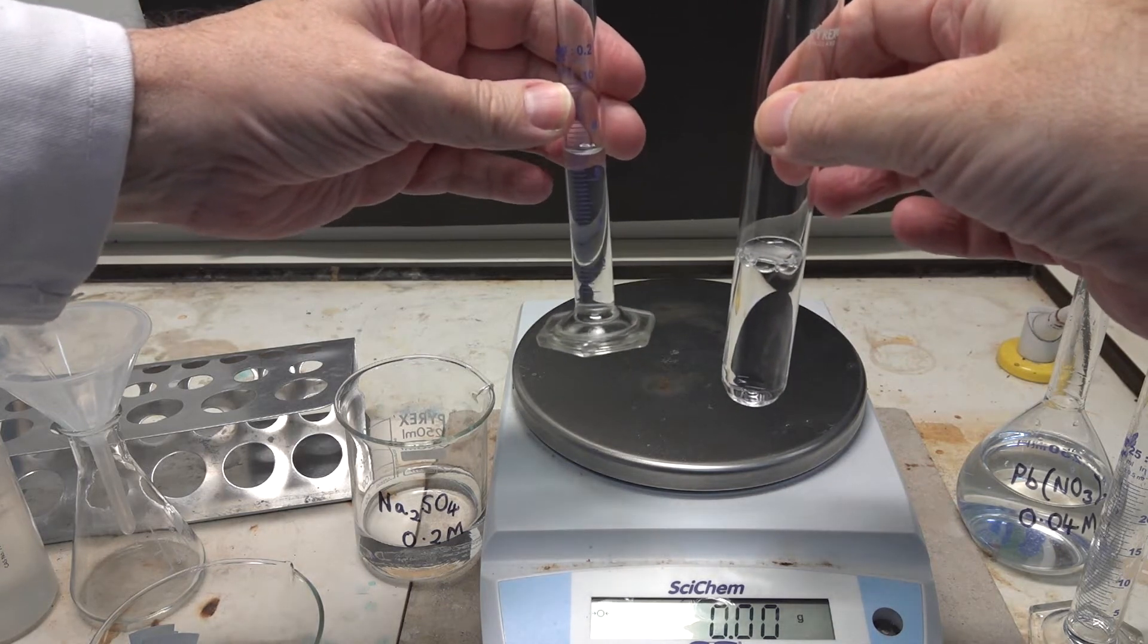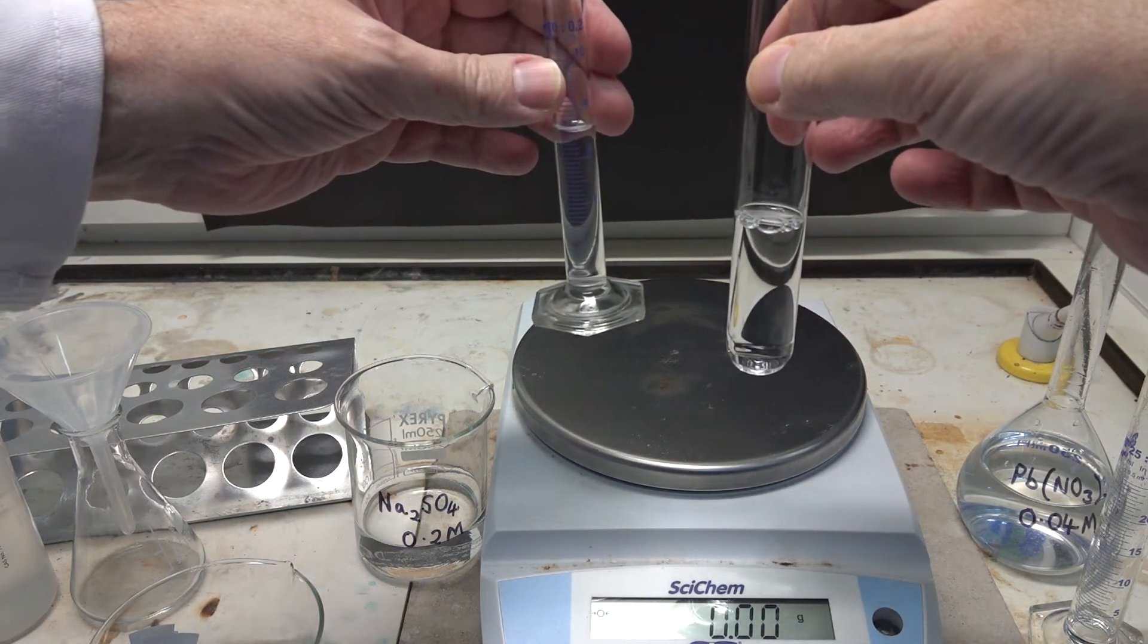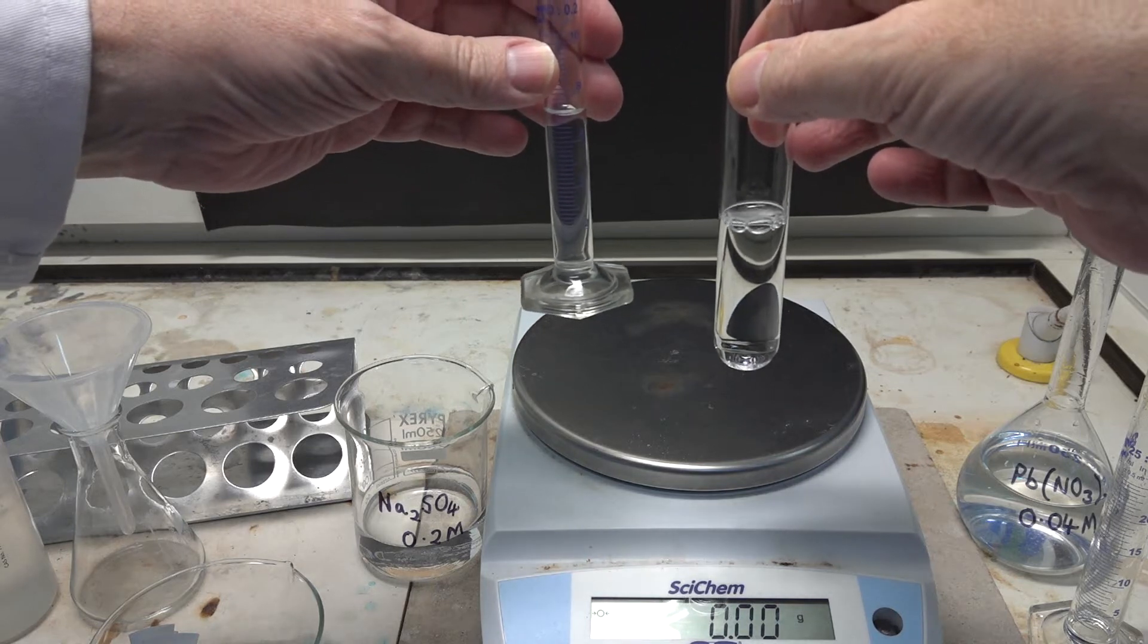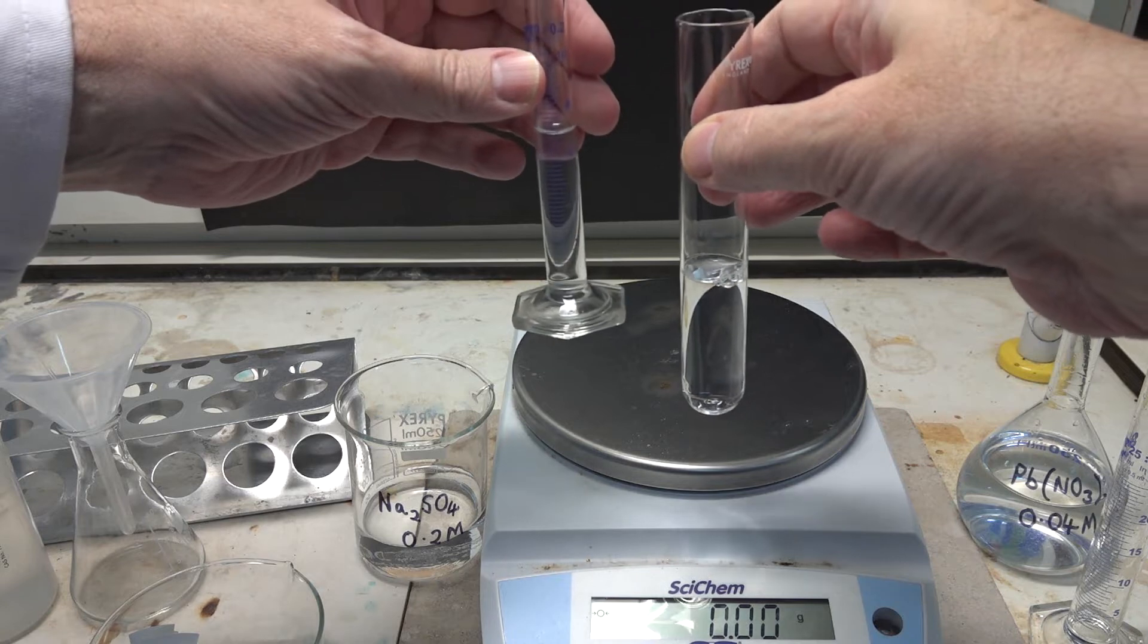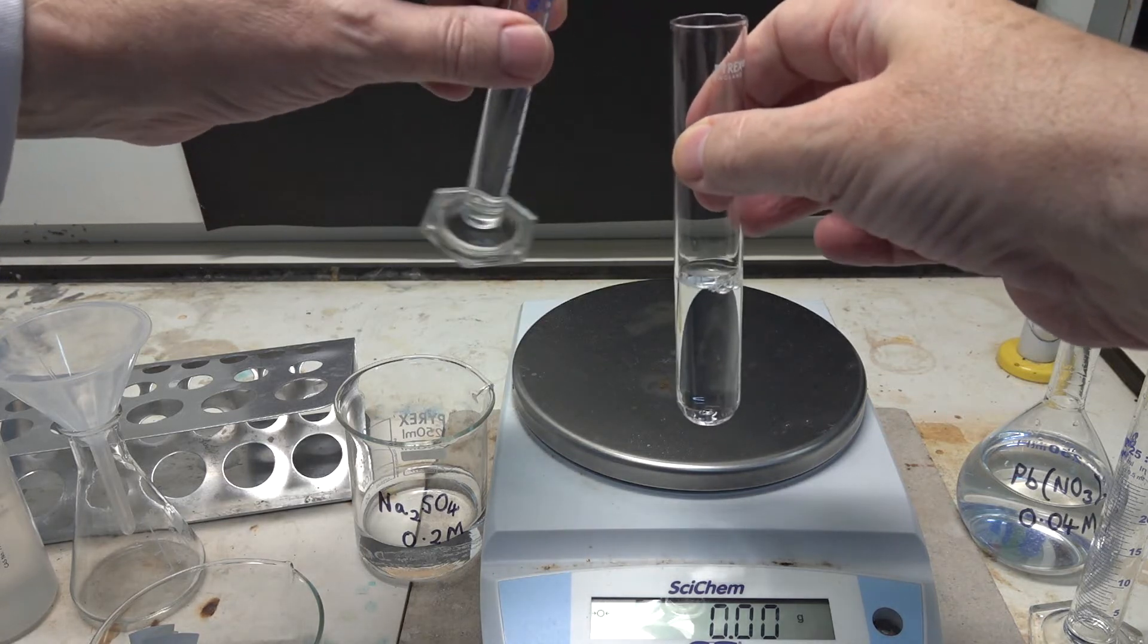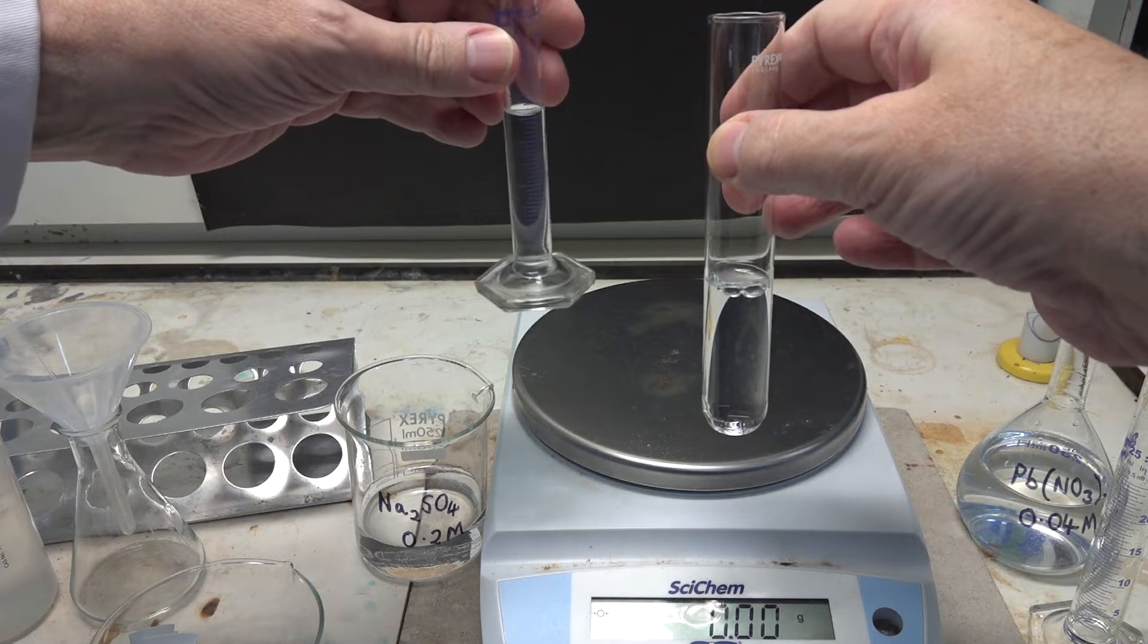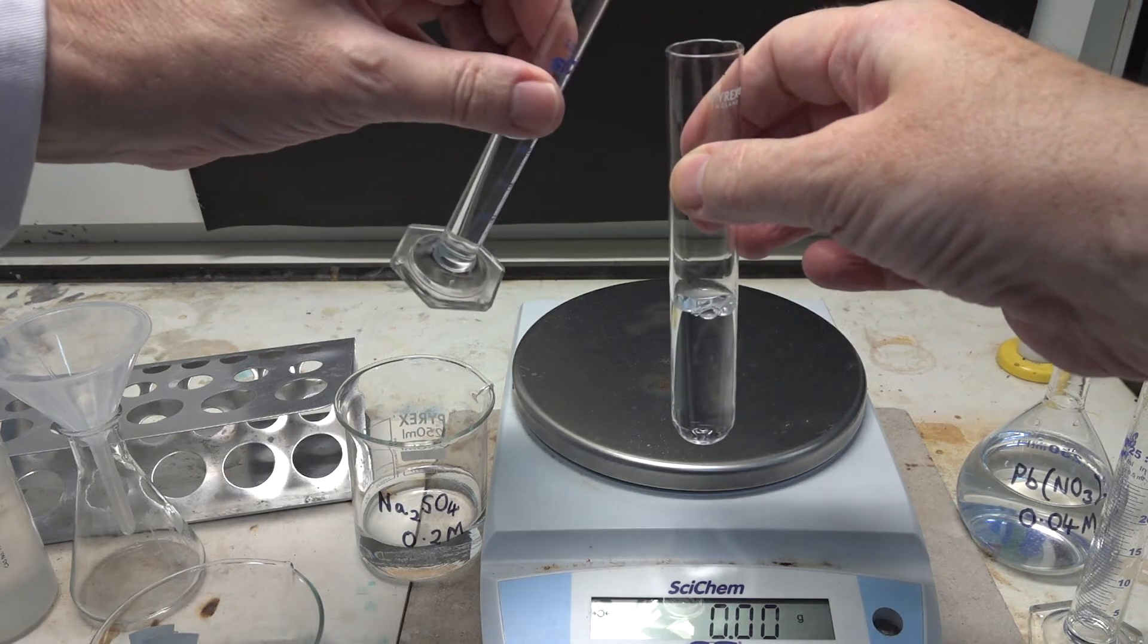Into that we're going to react it with 7 centimeters cubed of 0.2 molar sodium sulfate. You'll be able to work out by calculation which of the reagents should be in excess.